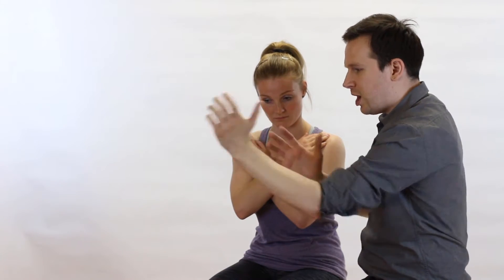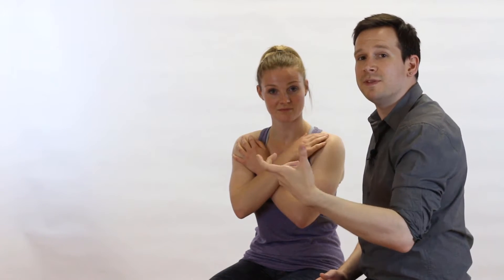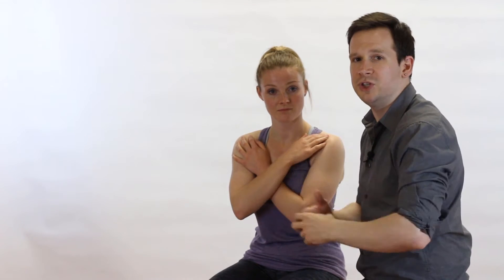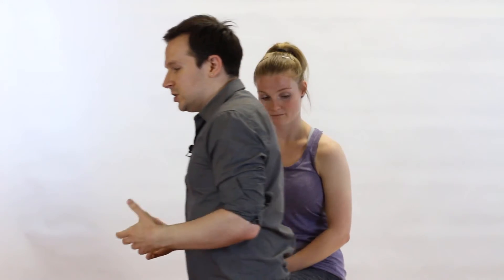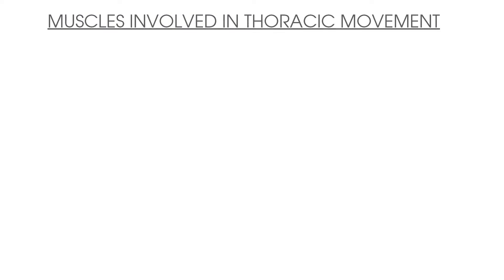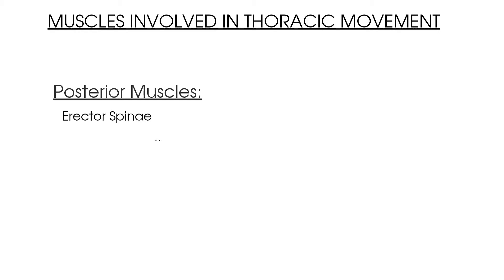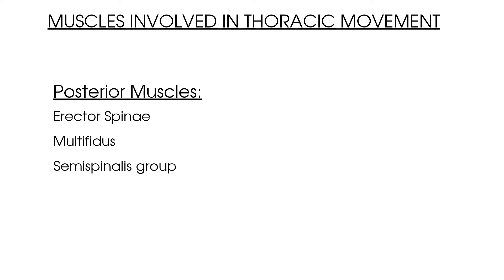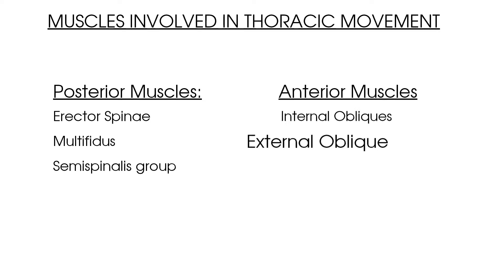Please don't sharply jar the patient because it doesn't give them a chance to join in — you might strain them and you also won't get a real appreciation for the muscles at work. So when we're doing our resisted tests, we need to think about two things: pain and power. If it's painful, then we're thinking it's going to be a contractile structure. In terms of power, we're going to rate it on the Oxford scale between 0 and 5. The key muscles involved in resisted thoracic rotation are the posterior muscles such as erector spinae, multifidus, and the semispinalis group, but also the anterior structures such as the internal and external obliques and the rectus abdominis.